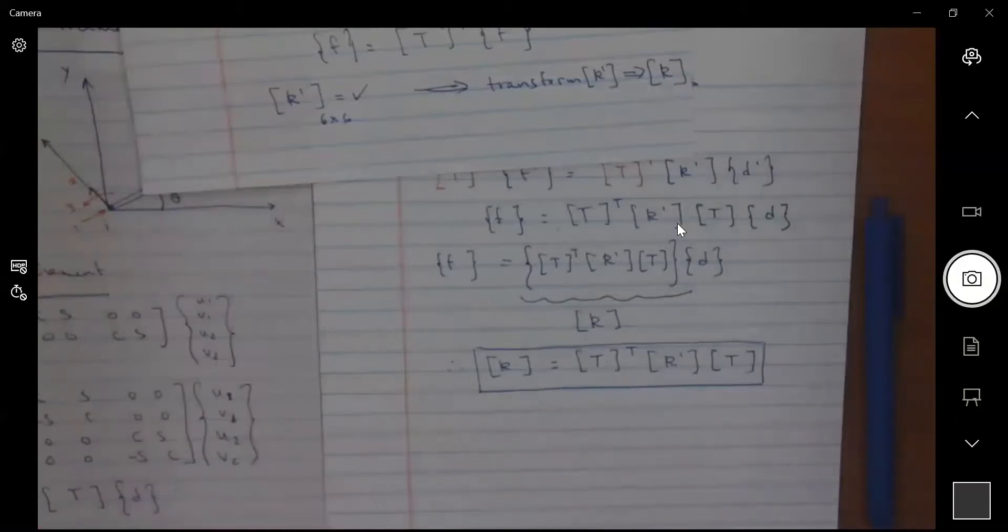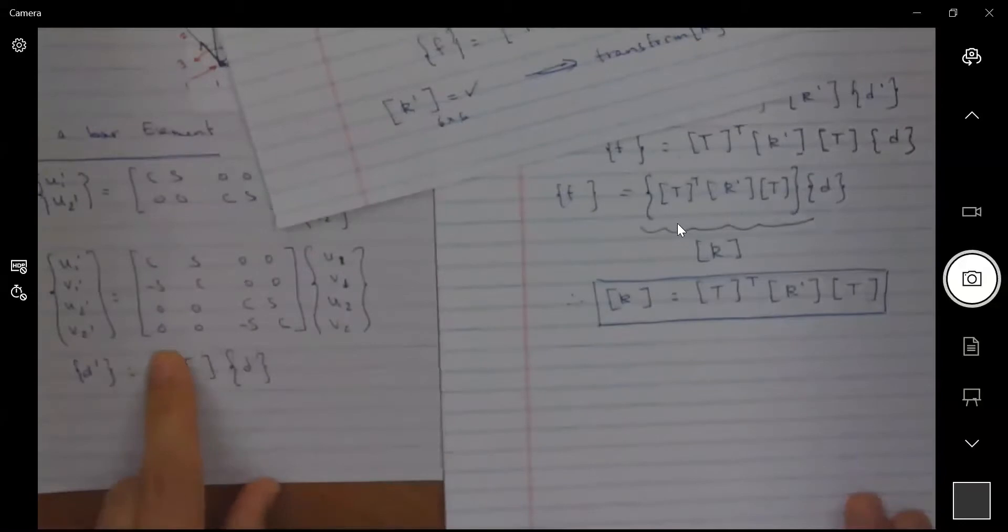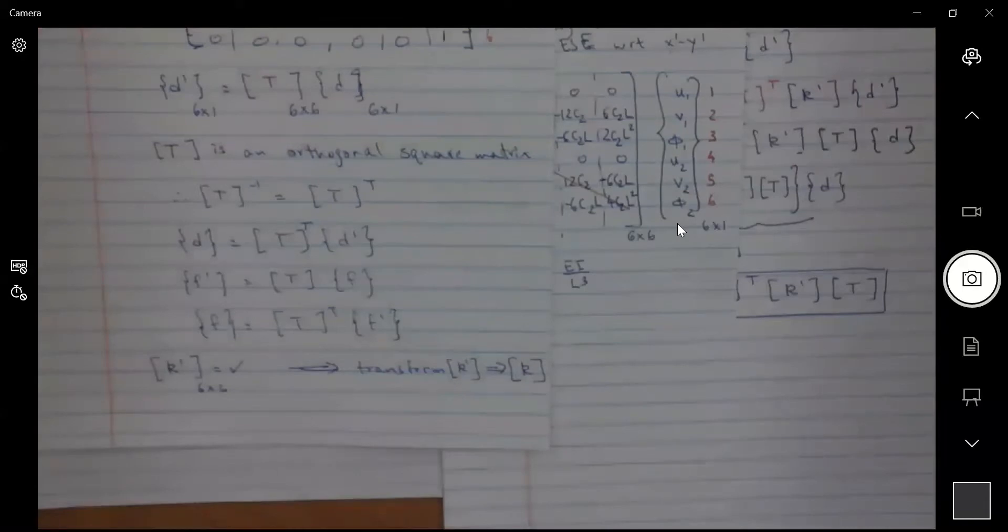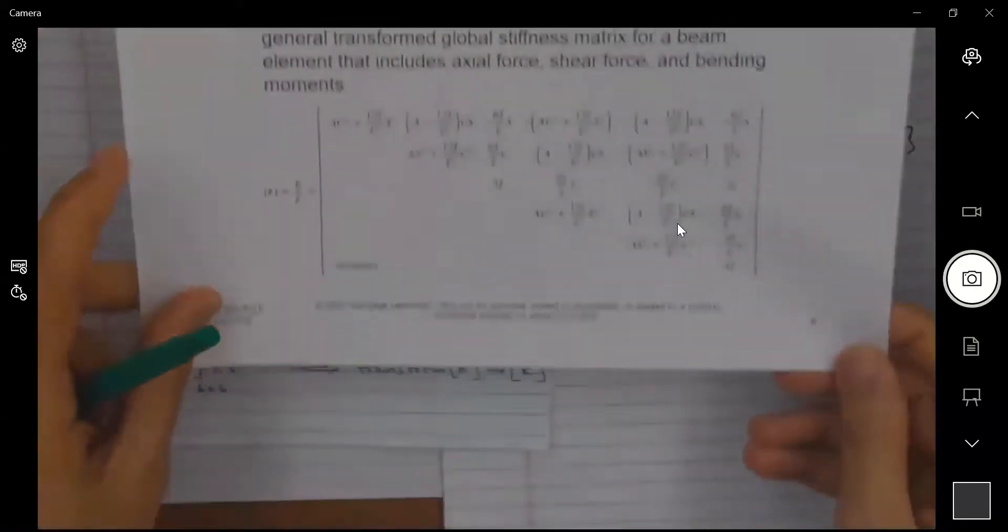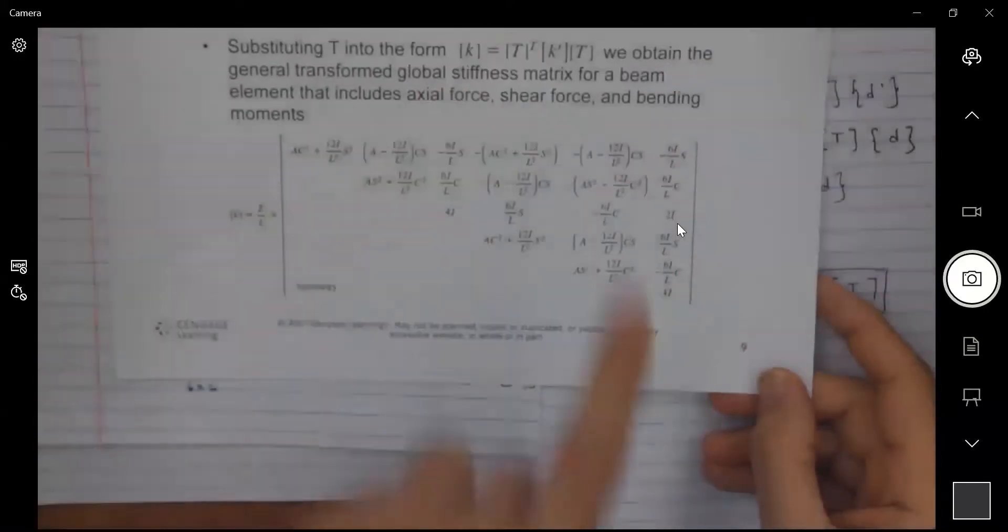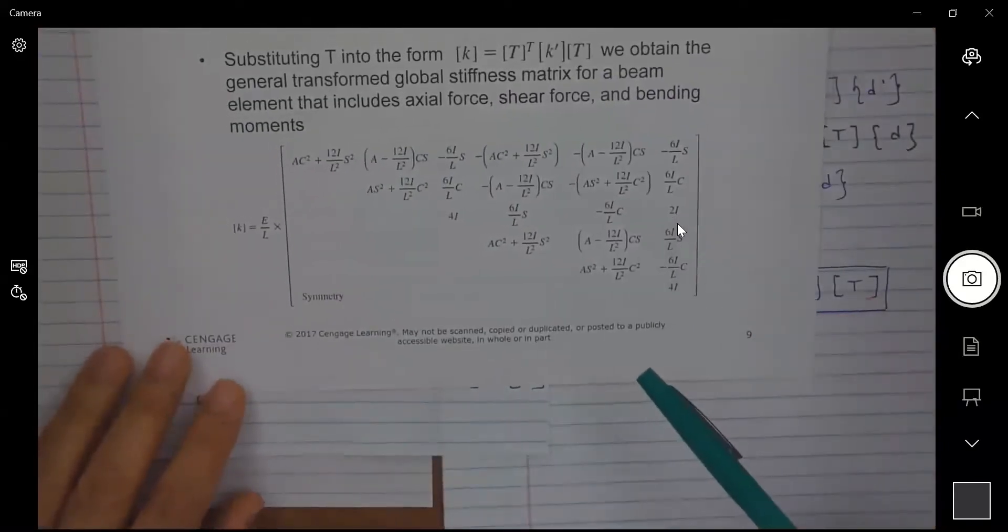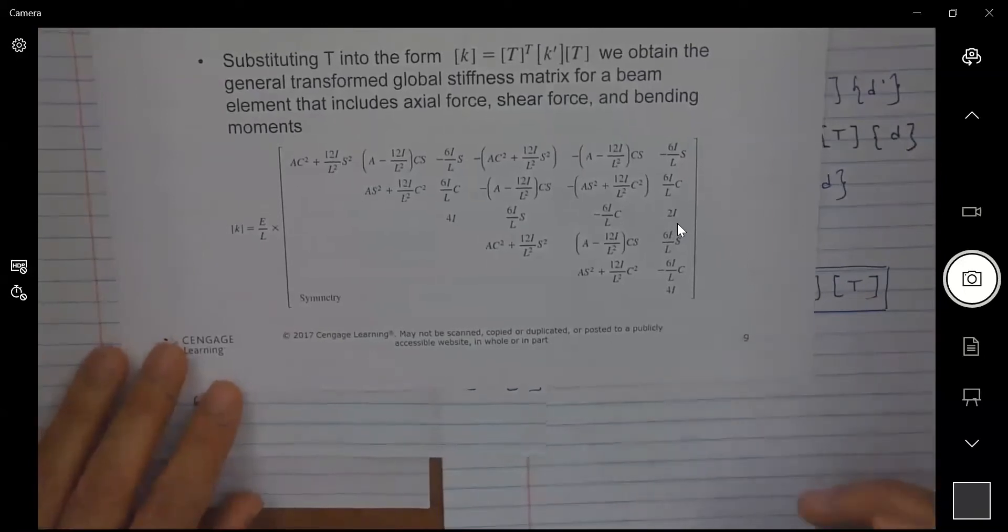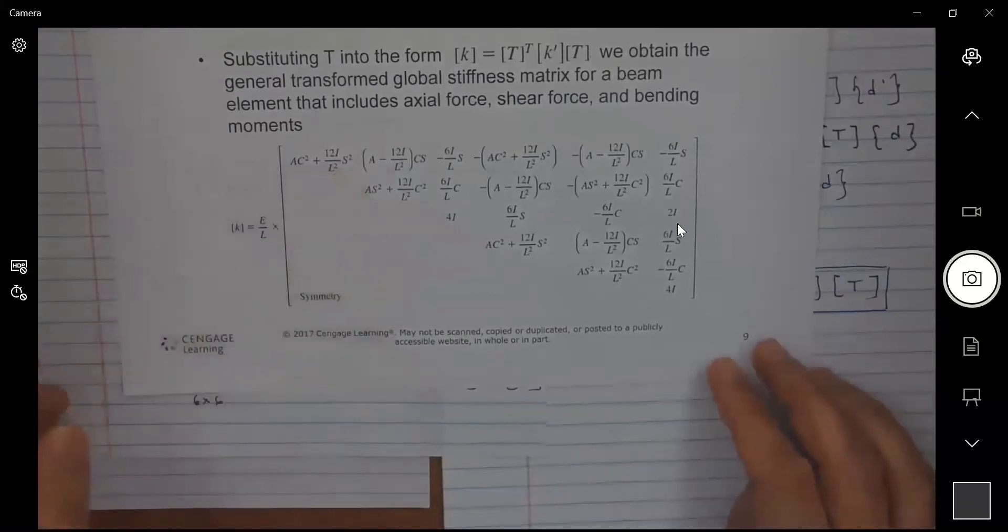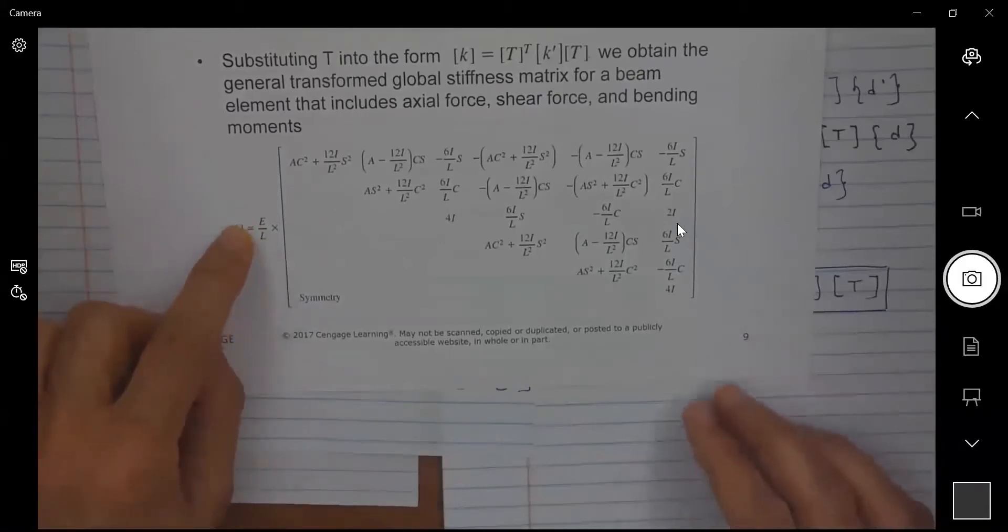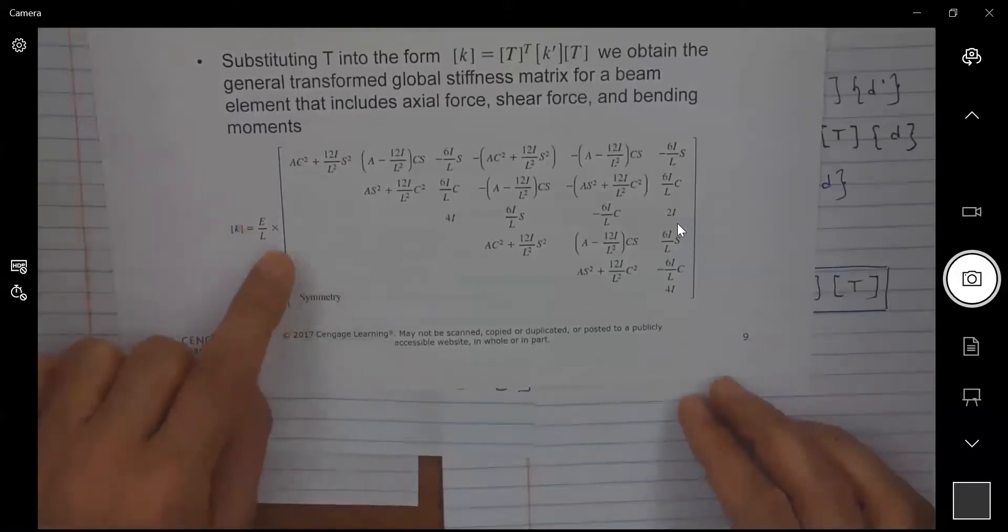So we have T here and I have k prime here. So using some matrix manipulation, we can show that the outcome here of this operation is going to be this matrix as it is given in your book, and you can see here we are using the cosine signs as well as the area, the length, and E.